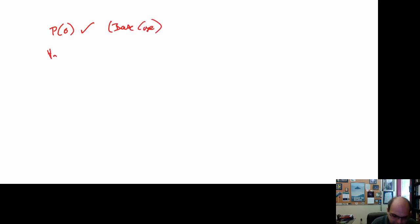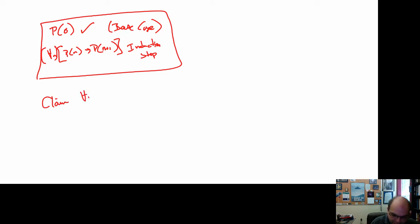And I have to prove that for all n, P of n implies P of n plus 1. That's the induction step. So these are my proof obligations. And now what I claim is that for all n, P of n is true. That's what I think is implied by this.